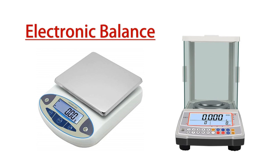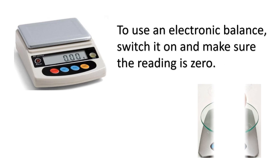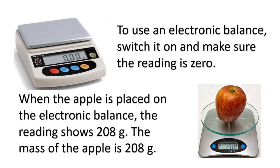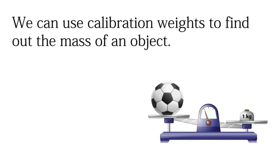How about electronic balance? These are some examples of an electronic balance, a very comfortable balance scale usually used in laboratories because it is precise and accurate. To use an electronic balance, switch it on and make sure the reading is zero. For example, when an apple is placed on the electronic balance, the reading shows 208 grams — so the mass of the apple is 208 grams. We can also use calibration weights to find out the mass of an object. Calibration weights are weights with known mass.